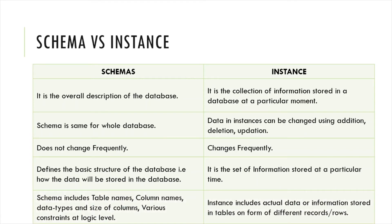Schema includes table name, column name, data type, size of column, and various constraints at the logical level. An instance includes the actual data or information stored in the database. Schema defines the overall structure, while the instance contains the actual data values stored in the particular columns and rows.